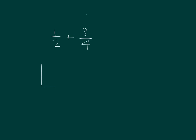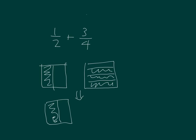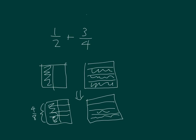I can model 1 half and model 3 fourths. Then make equivalent fractions. My equivalent fraction for 1 half is 4 eighths. Here I had 3 fourths, drawing one line down the middle, and I have the fraction 6 eighths.